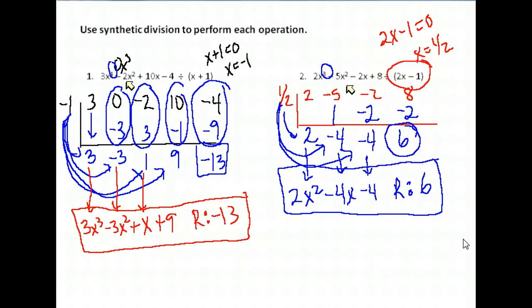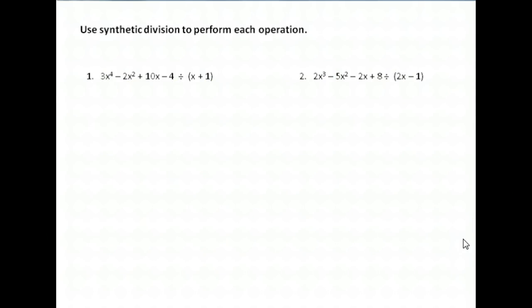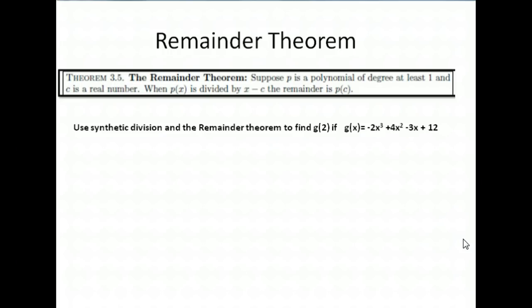First, it's the Remainder Theorem. Here is our remainder theorem, straight out of your book. You have a polynomial, at least a first-degree polynomial, so you have an x there. c is a real number, so any real number for c. If p of x is divided by the term x minus c, notice we were just doing division by x plus 1, x plus 2, x plus 1 half.